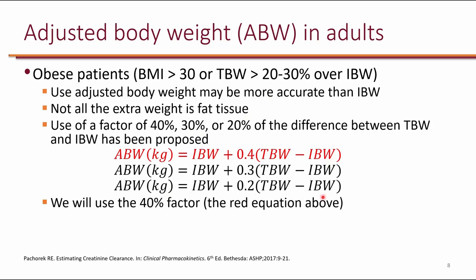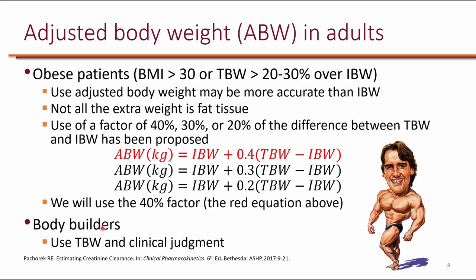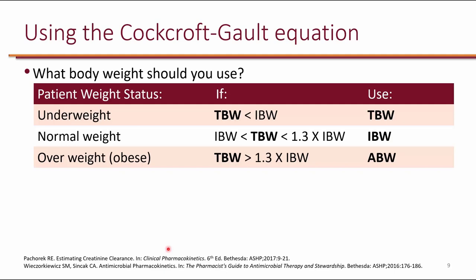For bodybuilders, even if their BMI or total body weight appears elevated, it's typically muscle, so you may not need to calculate adjusted body weight—always use clinical judgment. Summarizing the Cockcroft-Gault weight selection: if someone is underweight, meaning total body weight is less than ideal body weight, use total body weight. If normal weight—at least ideal body weight but less than 1.3 times IBW—use ideal body weight. If obese, defined for this class as total body weight at or above 1.3 times IBW, use adjusted body weight in the Cockcroft-Gault equation.